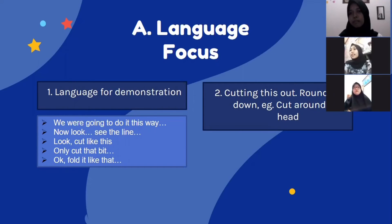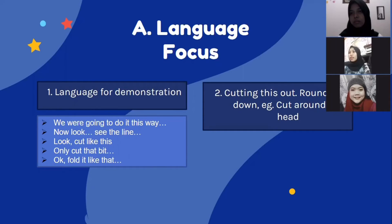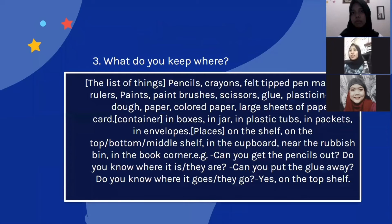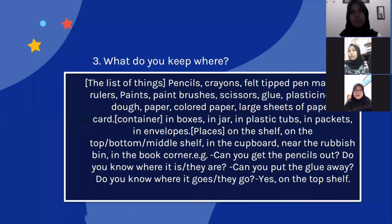The second is cutting instructions: round up, down, cut around the head. What do you keep? Pencil, crayon, felt tip, pen marker, rulers, paints, paintbrush, scissors, glue, plasticine, and many more.